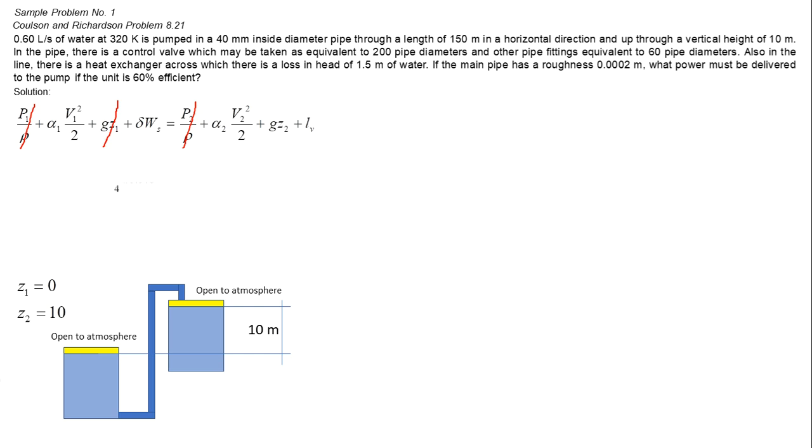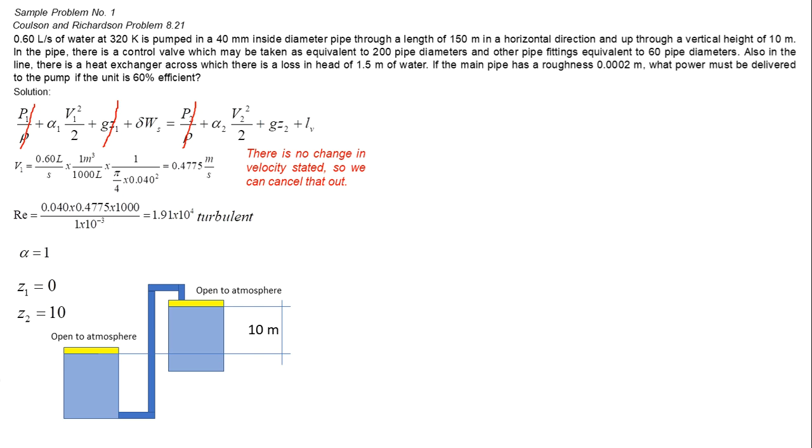Solving for velocity and Reynolds number. And now we solve for friction losses using the method of equivalent length. L is given as 150 meters. Lm equals total equivalent pipe diameter times the diameter of the pipe.